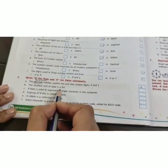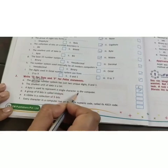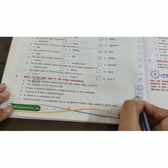The smallest unit of data is a bit. True. A byte is used to represent a single character in a computer. True.